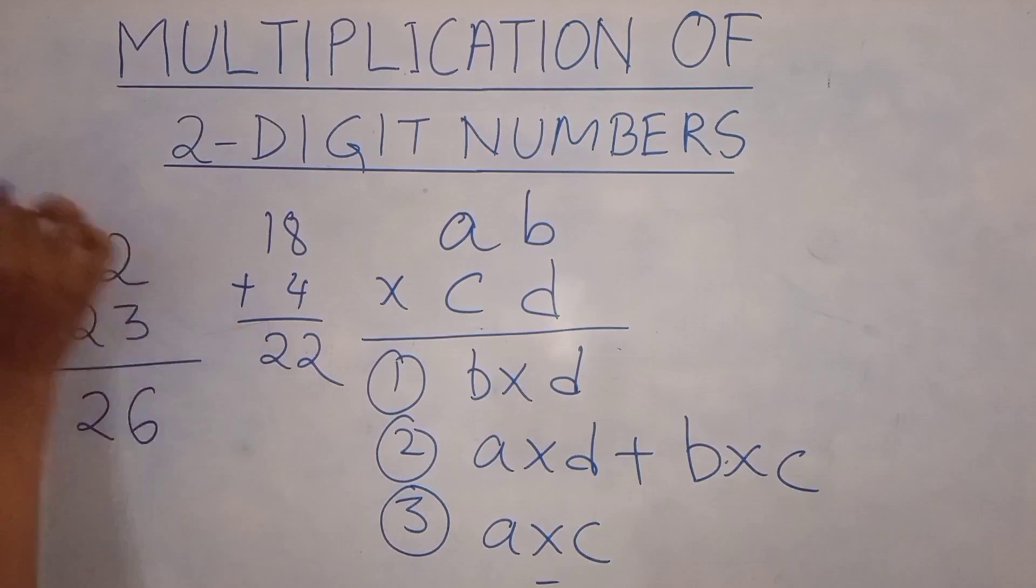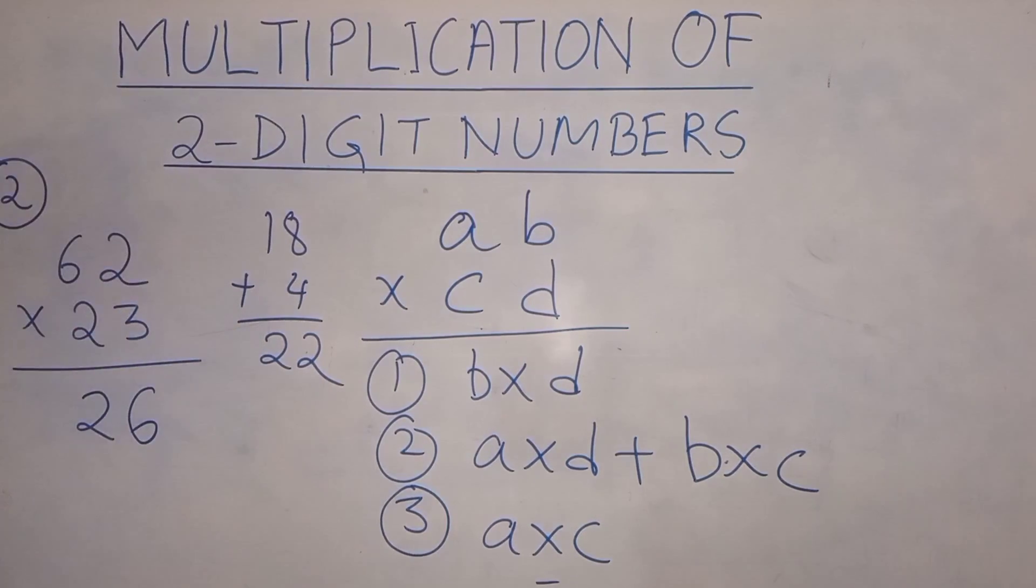We'll write the 2 here and take the 2 here. And lastly A into C: 6 into 2 gives you 12 and 12 plus 2 is 14. So your answer is 1426.